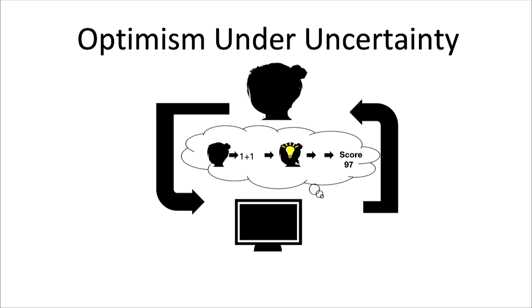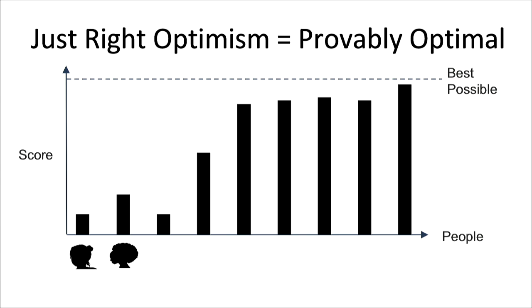In fact, beautifully, we can find that just the right amount of optimism can be provably optimal. What this means is that for some types of scenarios, being optimistic can allow our algorithms to require the minimal amount of data possible that any agent, artificial or human, can need to learn to make good decisions.